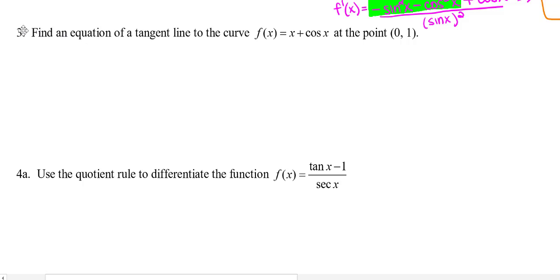Let's look at this problem. Find an equation of a tangent line to the curve f(x) equals x plus cosine x at the point (0, 1). First, let's take a look graphically at what they're asking us to find.